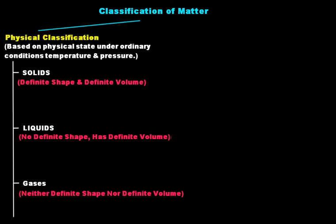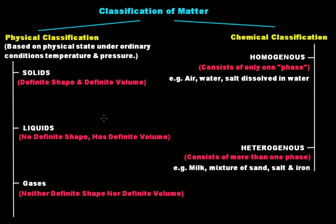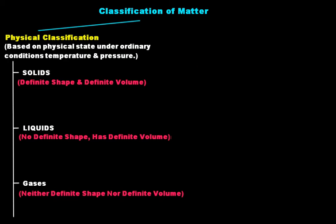So the next important point is: what is the classification of matter? How is matter classified? Well, there are two different ways to classify matter. The first way is the physical classification and the next way is the chemical classification.